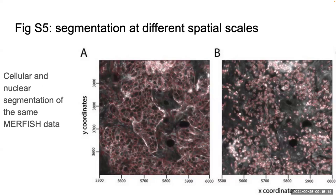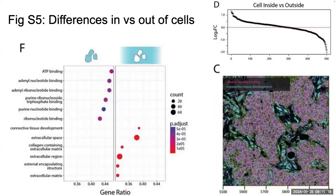The interesting part of the analysis is the next section. Starting with panel D in the top right corner, something unique they were able to do — based on how spatial information is represented in the object — was a differential expression analysis trying to see what genes were expressed inside versus outside of a cell. This is a hard thing to do without a really organized object structure like Giotto. For each gene, they show the log2 fold change, ranked in descending order. A lot of genes aren't going to be differentially expressed, but you do get some.